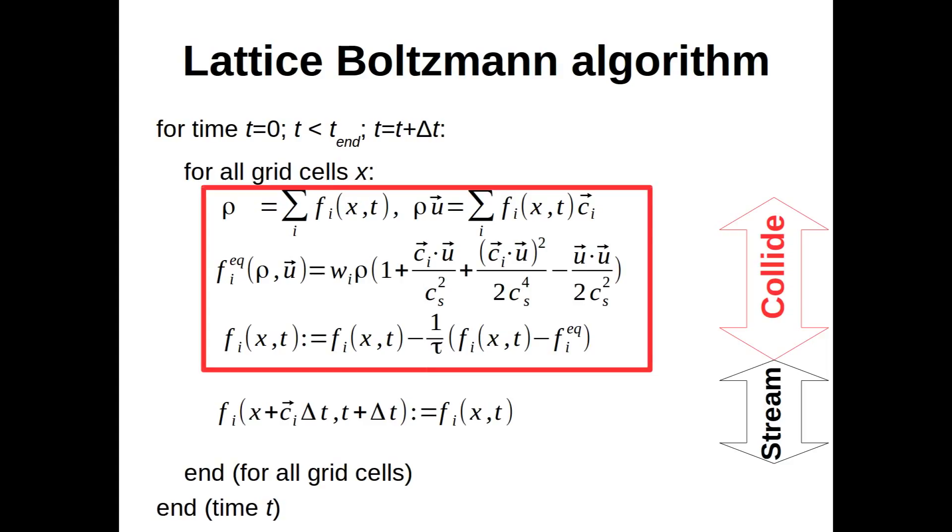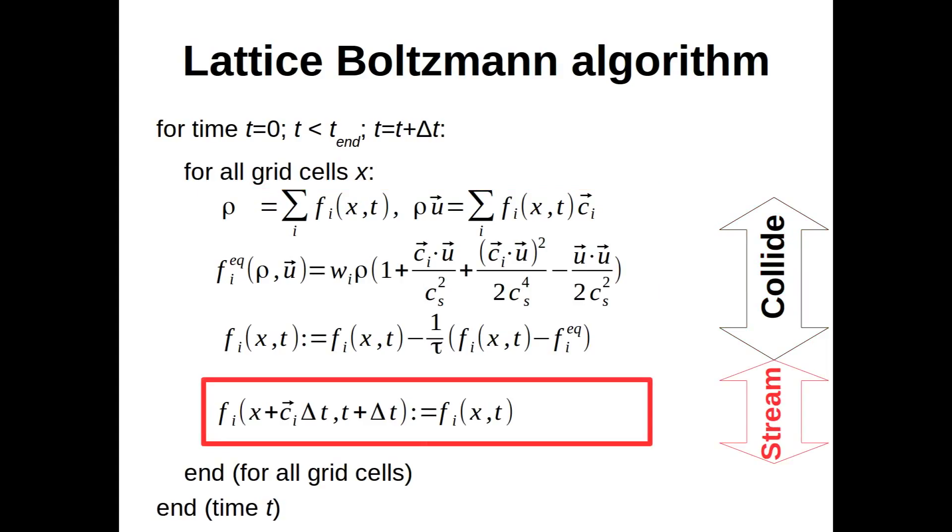Afterwards, we carry out the streaming step to obtain the new distribution values at the next time step. The highlighted update rule for the distributions Fi is known as the Lattice Boltzmann equation in BGK form.